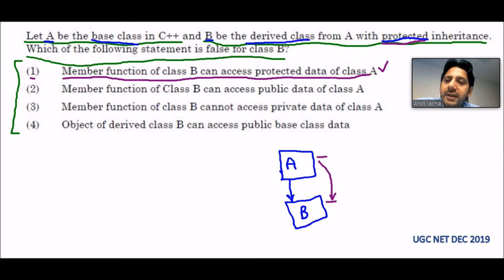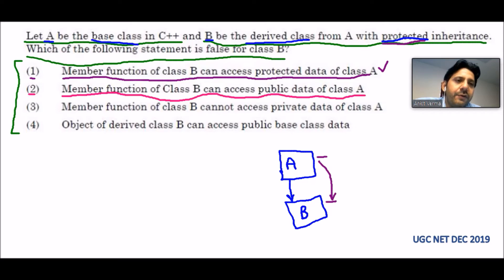Option B says: member function of class B can access public data of class A. Whenever we inherit with protected inheritance, both protected as well as public data members can be accessed in the derived class. Even public members can be accessed. So that statement is also true.